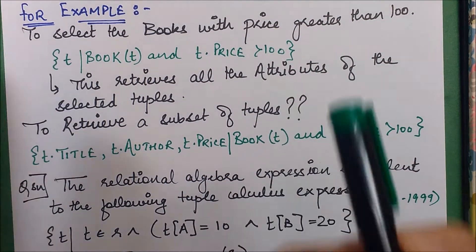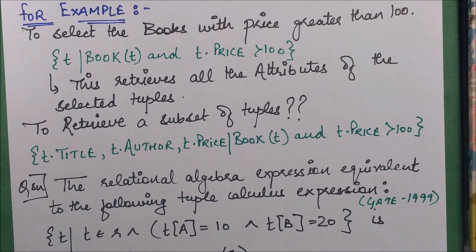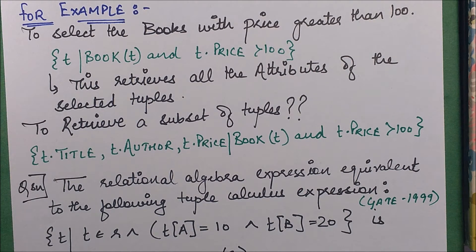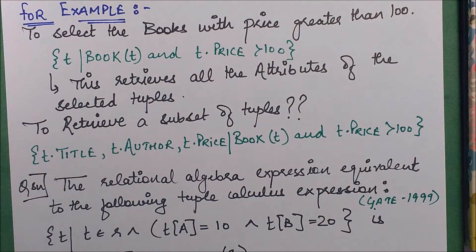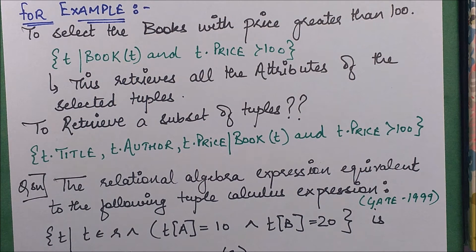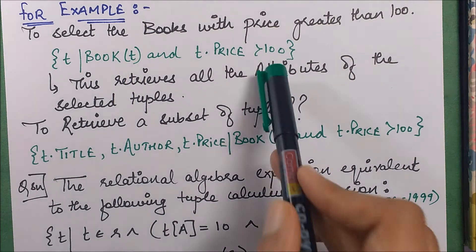This is basically a particular format to specify your query. This retrieves all the attributes of the selected tuples. Now let's go one step higher - this retrieves all the attributes of those tuples, those books which have price greater than 100.